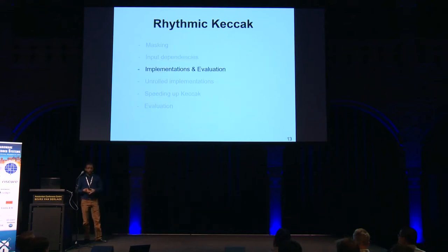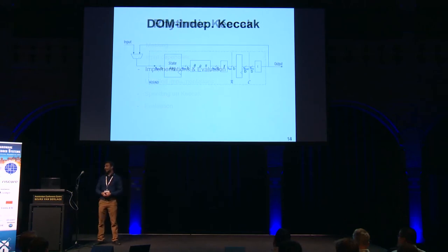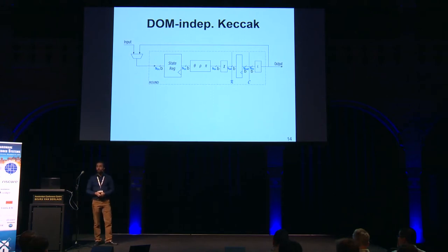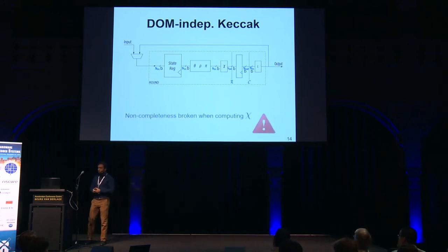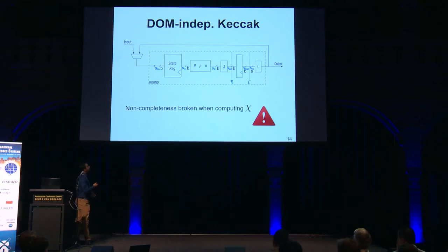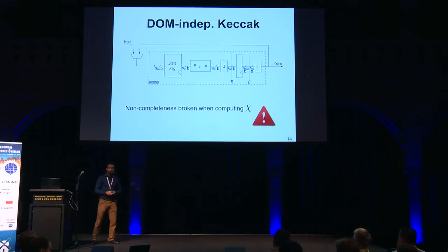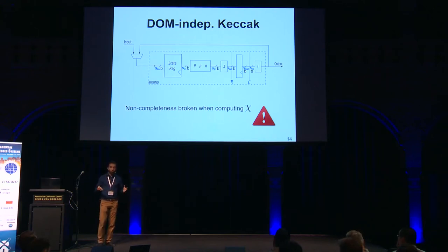I'll now show a few implementations we produced. First, we implemented a first-order secure Keccak implementation using the DOM sharing scheme. We found there was a non-completeness flaw in χ (the non-linear permutation). I'll show you how this leakage appears by walking through one round of Keccak.